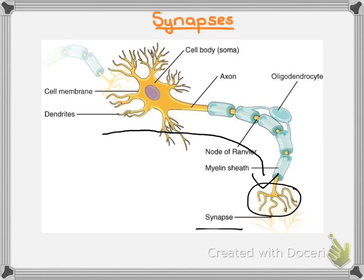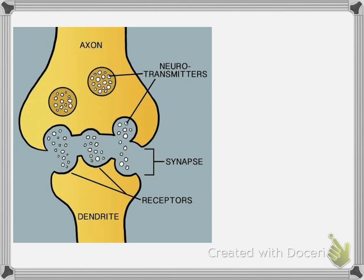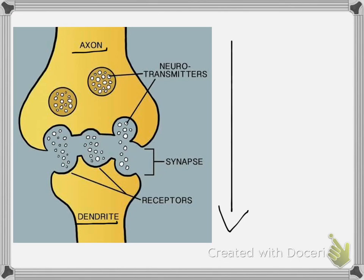The synapse is effectively the space in between one neuron's terminal branches and the next neuron's dendrites. If we look at a closer image of what a synapse looks like, you will see the axon of the first neuron, and that then links down into the dendrite of the next neuron where our impulse is going to. So effectively we are moving from the axon through the synapse to the next neuron's dendrite.